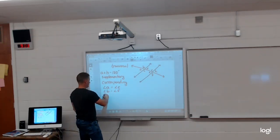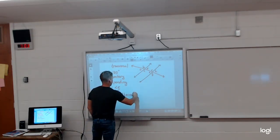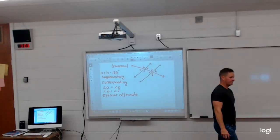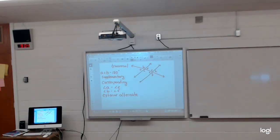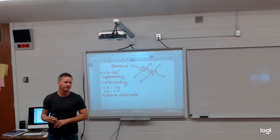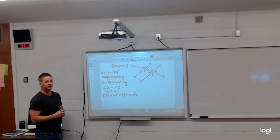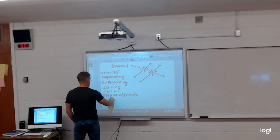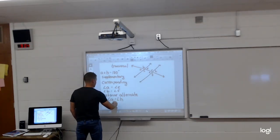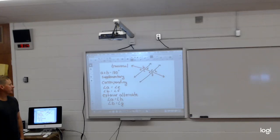We have exterior alternate angles, also equal to each other. So alternate means on opposite sides of the transversal, and exterior means not between them. So give me an example of two that would be exterior alternate angles. A and H. And what's the other one? D and E. That's right. Those are exterior alternate angles.